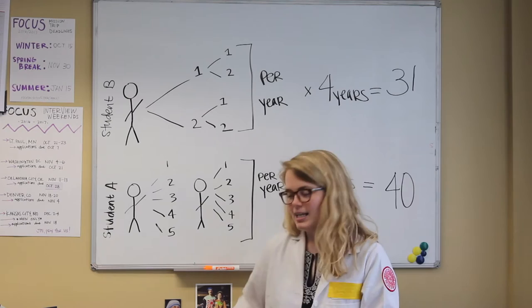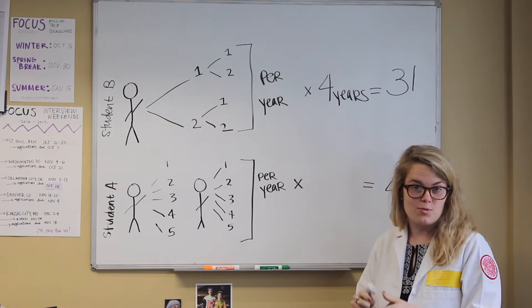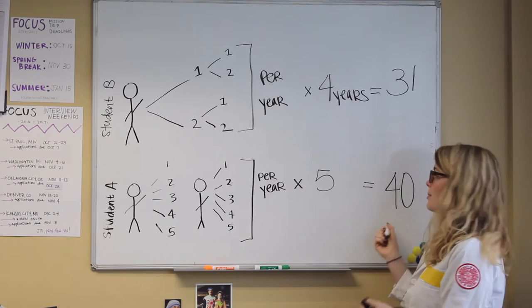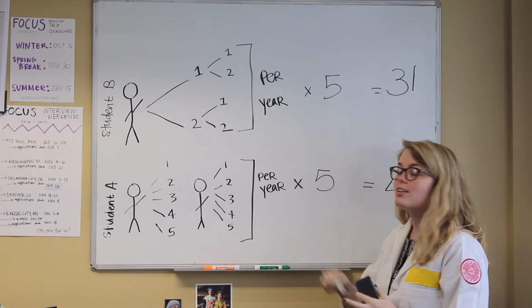Let's look at the end of five years. Let's assume that student A has graduated in four years. At the end of five years, student A's yield remains at 40. But because student B invested in two, who invested in two, who invested in two for five years, even after student B has graduated, that yield becomes 63.